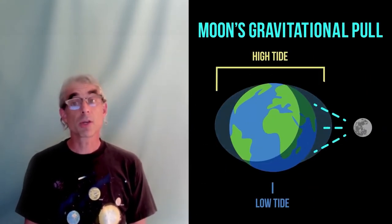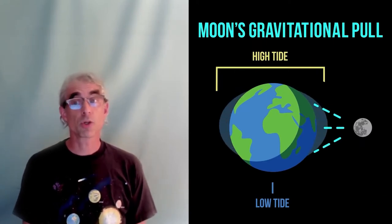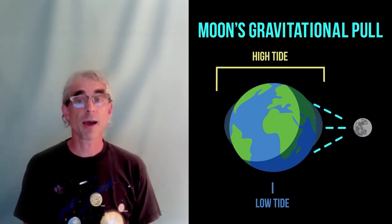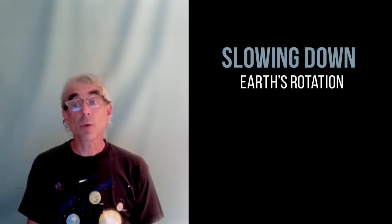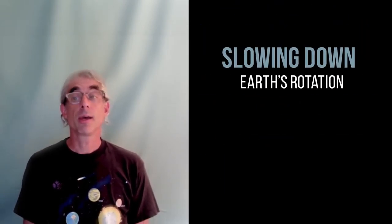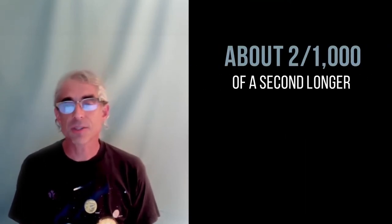The moon's gravitational pull, with its orbital motion, is responsible for our ocean tides on the Earth. And this pull is actually slowing down the Earth's rotation, making our Earth day a tiny bit longer, about two thousandths of a second longer every century.